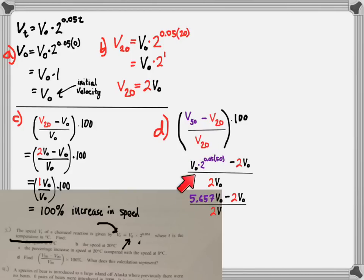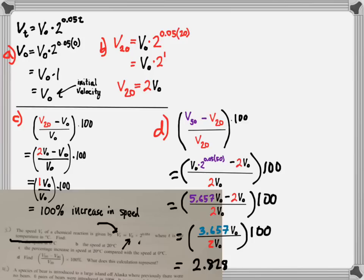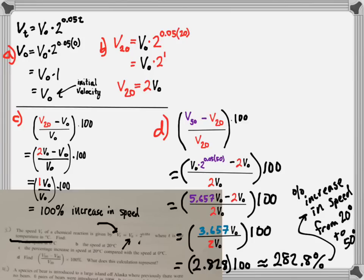All that divided by the speed at 20, which is twice the initial velocity. So that turns out to be 3.657 times the initial velocity over 2 times the initial velocity. Number crunching it all out, I get 282.8%. So in other words, the percent increase in speed from 20 degrees to 50 degrees is a 282% increase. What's interesting about this is, in the first 20 degrees, we only had a 100% increase. 30 degrees more from 20 to 50 shows a 282% increase, and so that's an increase in speed. Definitely representative of exponential growth.